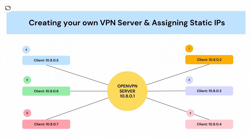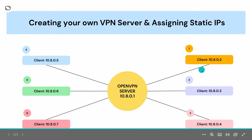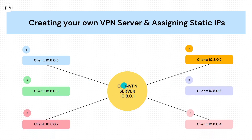Hello everyone, welcome to my YouTube channel. In today's video we will be creating a VPN server using a tool called OpenVPN. We will create an OpenVPN server on an Amazon EC2 instance, connect multiple clients to it, and assign a static IP so whenever the VPN server starts or restarts, you won't lose the IP address.